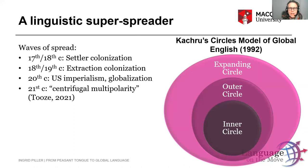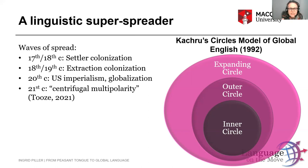What we are seeing in the 21st century has slightly changed, in that US power is on the wane. At the same time, the spread of English hasn't actually slowed down. In a recent book about the effects of the pandemic, British sociologist Adam Tooze speaks of the new world order as one of centrifugal multipolarity, where the hegemony of the West — of the UK and the US — that has characterized a couple of centuries, is actually going away and being replaced by other emerging powers.